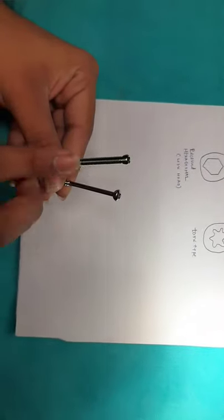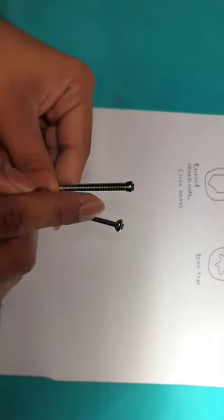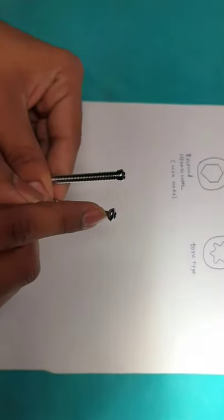Screw heads have two types: this is a threaded head and this is a simple head. The threaded heads are locking screws and this is the simple screw.